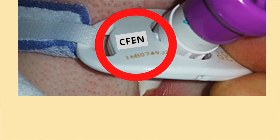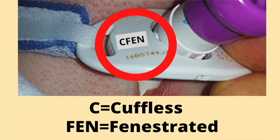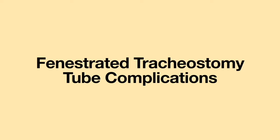The phalanges of the tracheostomy tube have important information on them and should indicate if the tracheostomy tube is fenestrated. For example, a Shiley fenestrated cuffless tracheostomy tube will have the letters C-F-E-N on it. The C is for cuffless; the F-E-N is for fenestrated.